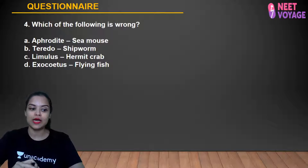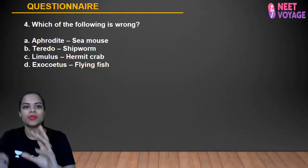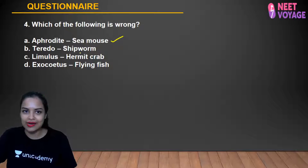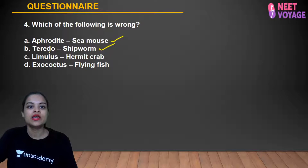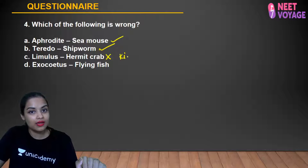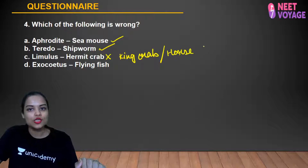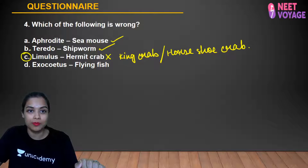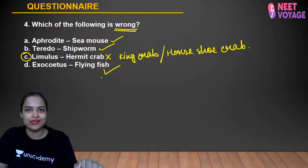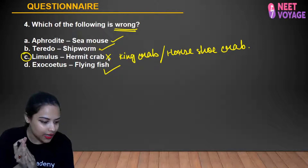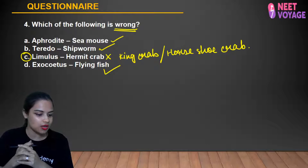Question 4: Which of the following is wrong? Aphrodite (sea mouse) belongs to Annelida — correct. Pterodosmolus is ship worm — correct. Limulus is not hermit crab; Limulus is king crab, also called horseshoe crab — so that option is incorrect. Exocetus is a flying fish (bony/osteichthyes) — correct. The answer is that Limulus is the king/horseshoe crab, not hermit crab. Samreen, Tanusha, Sabah, Anshika, Shashank, and Anusha gave the right answer.